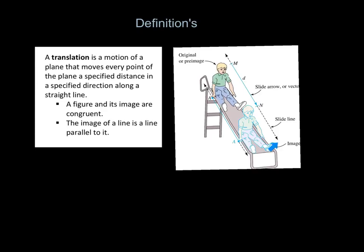...the vector arrow right here. The vector arrow indicates which way the translation is going. For instance, this little boy is going down the slide this way, so the vector arrow is also going down this way. Examine this card...